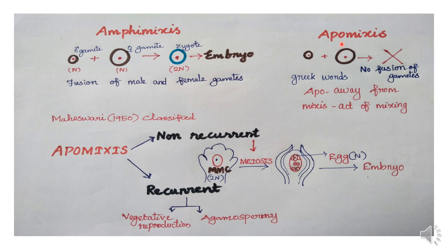Students, let's see the topic of mixes. Amphimixis is different. Amphi means both, and mixes is the act of mixing. It is the fusion of male and female gametes. In sexual reproduction, the male gamete and female gamete develop the same embryo. So this is Amphimixis — fertilization.